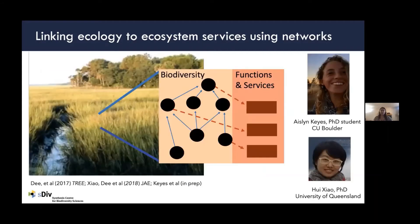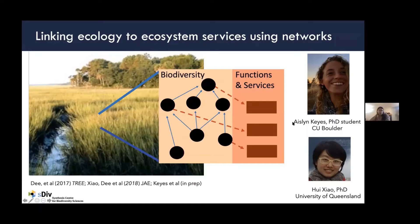I'm going to highlight two sets of projects: one led by Aislinn Keyes, a PhD student in my lab at CU Boulder, and one by a collaborator during her PhD work at University of Queensland. To address this question about indirect consequences of species interactions for services, we link the ecology of services to the services using networks — representing species as nodes and their interactions, but also adding ecosystem services as nodes in the network. This lets us identify species that directly provide services and embed those services in these food webs.